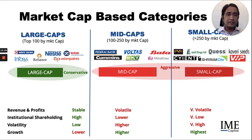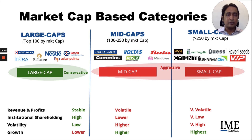Mid cap and small cap funds are more suitable for aggressive investors, primarily because revenues and profits of these underlying companies tend to be more volatile, with a lower level of institutional shareholding leading to a higher degree of volatility. But the growth is relatively much higher compared to large cap funds.